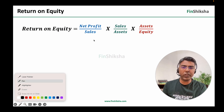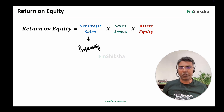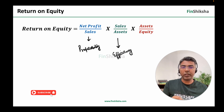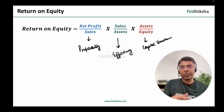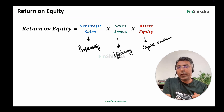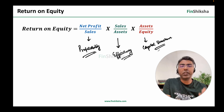In a nutshell, the first component talks about the profitability of the company — how much profit the company is generating per rupee of sales. The second component talks about the efficiency of the company — how much sales the company is generating per rupee of assets, higher the better. The third component talks about the capital structure of the company — how much is debt, how much is equity. Generally when return on equity goes up, that's good, but a deeper understanding tells us whether it's from improved profitability, efficiency, or a changed capital structure.